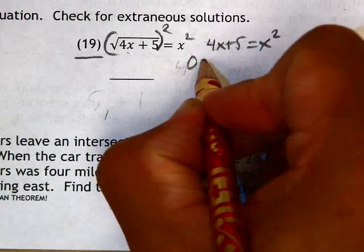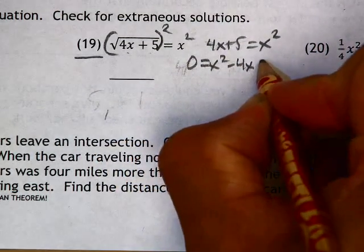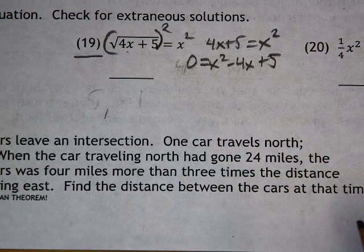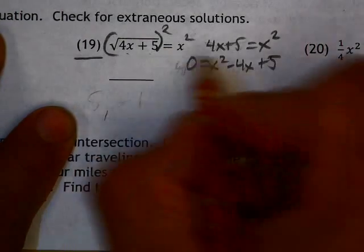So on the left side I'm left with 0 equals x squared minus 4x plus 5. At this point you try the diamond to see if that works. The diamond will not work, so you must use the quadratic formula.